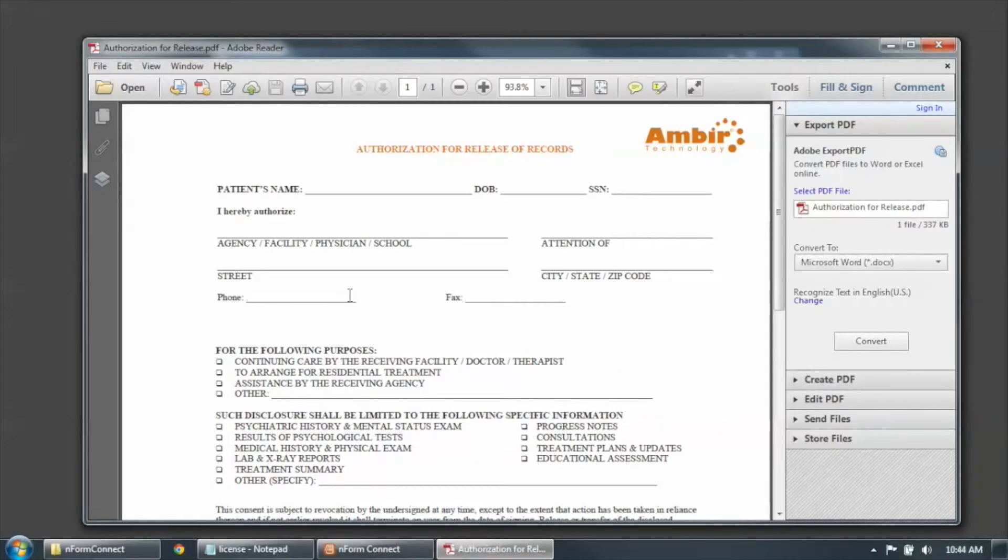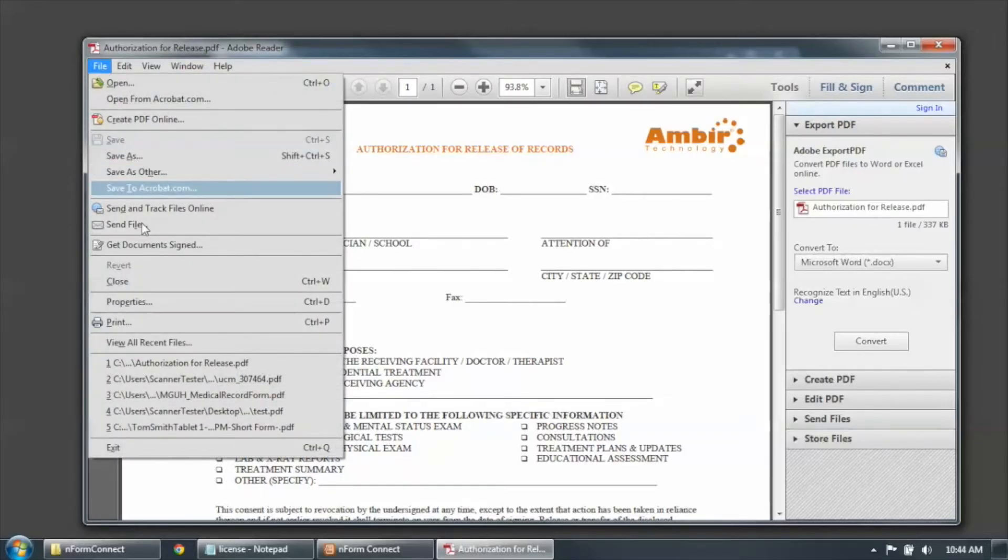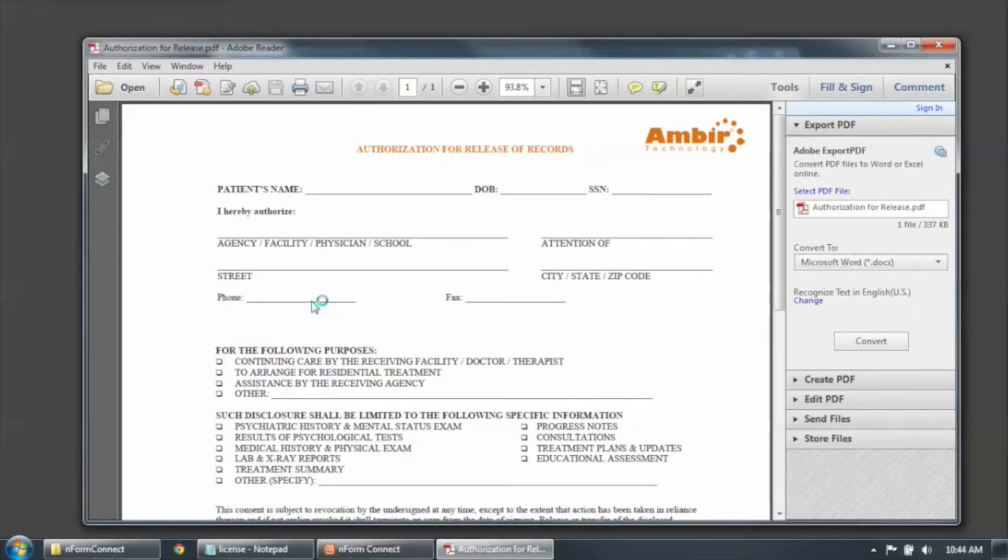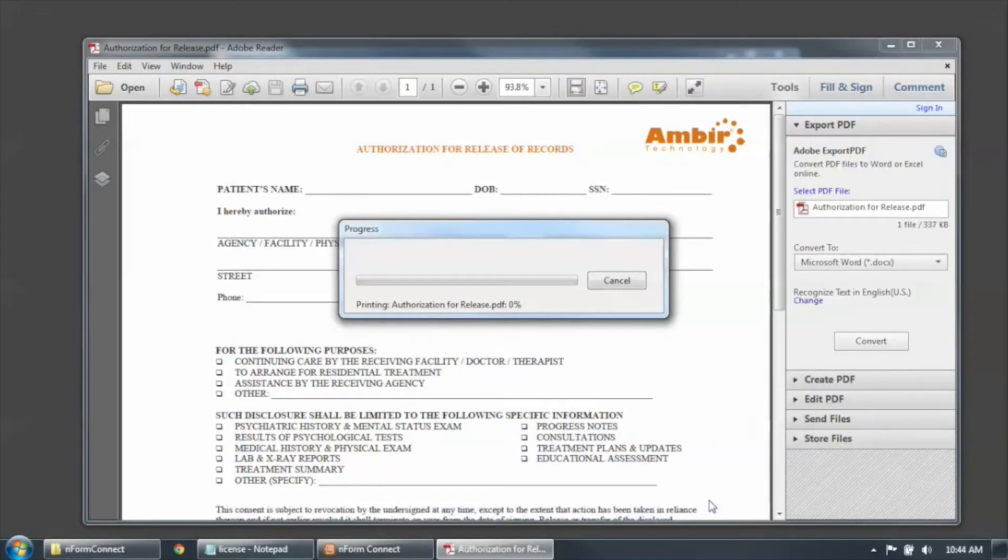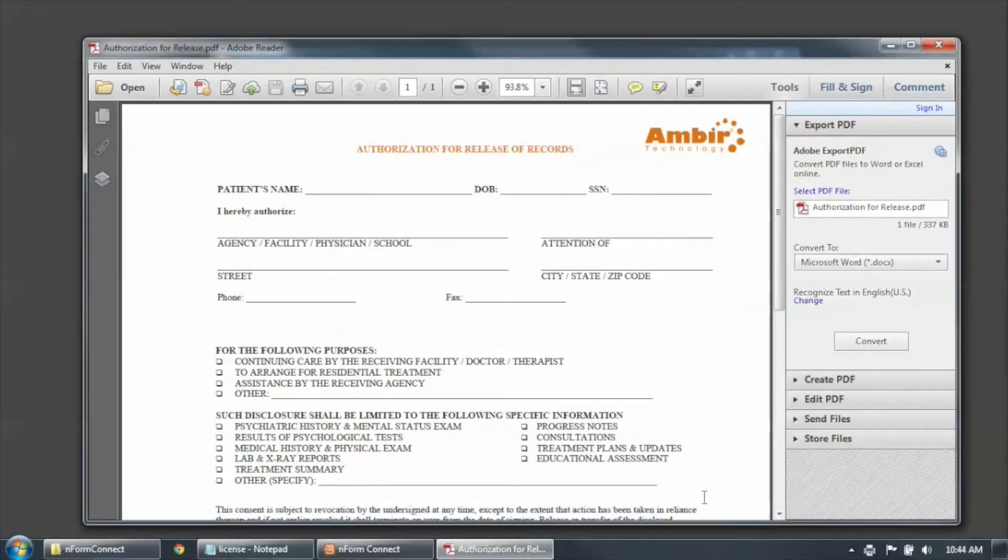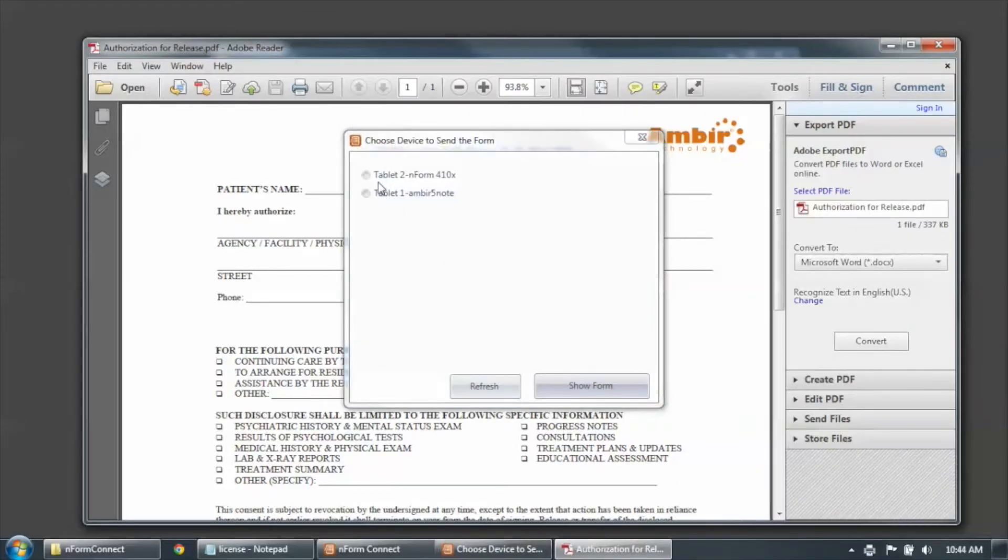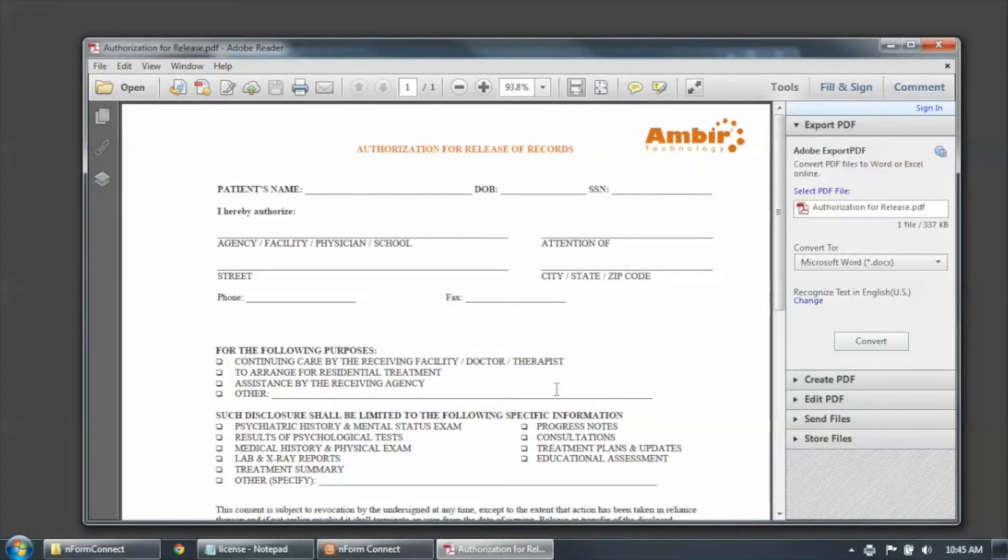The second way I can send a form to the tablet is by simply printing a form from any Windows application to the Amber document printer. So you'll notice here in my list of printers, the Amber document printer is selected. And all I do is click on print. And then a dialog box pops up asking me which tablet I want to send it to. And here I'm going to send it to the 410X. Then I click on show form. And the form is sent to the tablet.